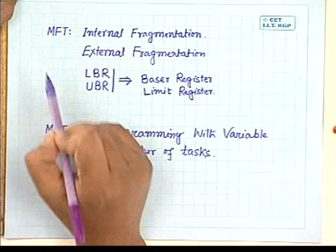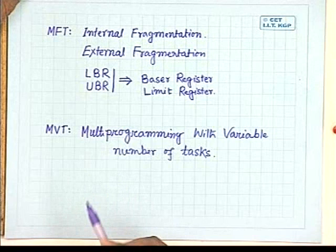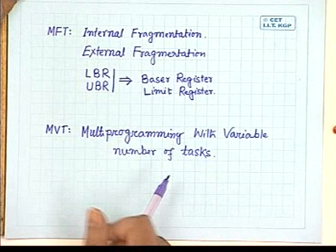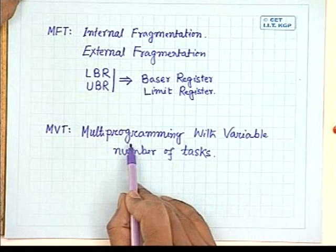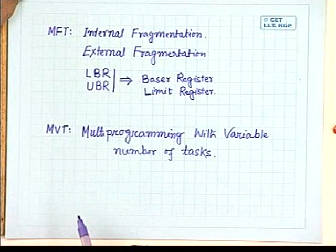In MVT, there are no pre-decided fixed partitions. Instead, partitions are created of appropriate size when they are needed. The number of partitions may vary depending on the size requirements of different jobs and the number of jobs to be executed. Because the number of jobs is variable, the degree of multi-programming is also variable. This is what is exploited in MVT — multi-programming with variable number of tasks.